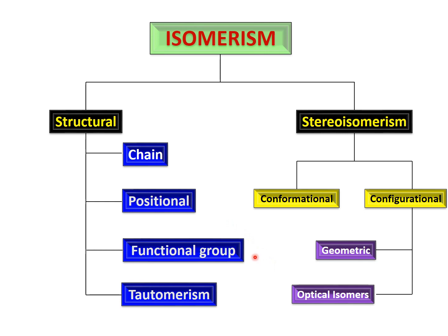Next is functional group isomerism. Here, two molecules have the same molecular formula but different functional groups. A famous example is ethanol (C2H5OH) and dimethyl ether — both have two carbons, six hydrogens, and one oxygen. Ethanol has a hydroxyl functional group — it's an alcohol — while dimethyl ether has an ether functional group. The molecular formula is the same but the functional groups are different.